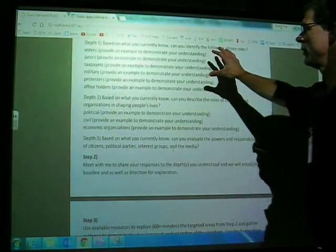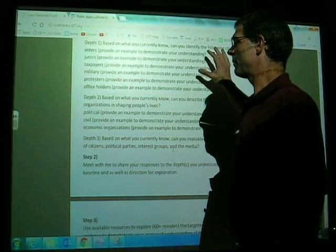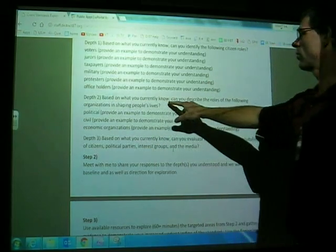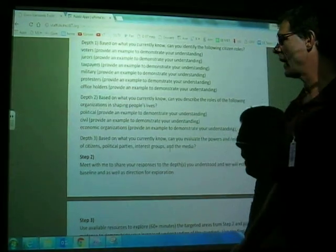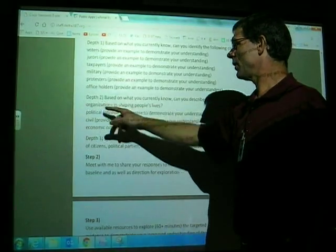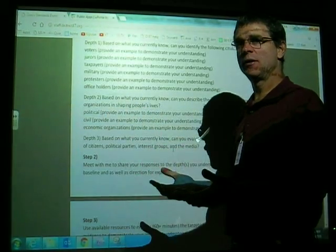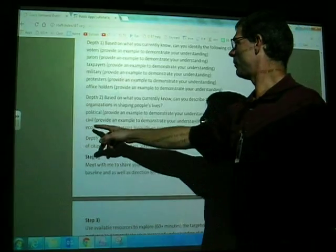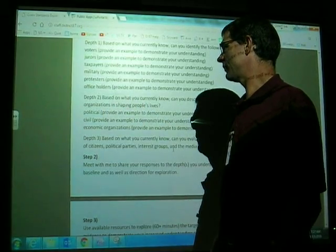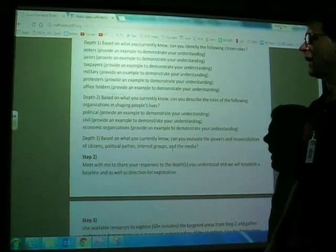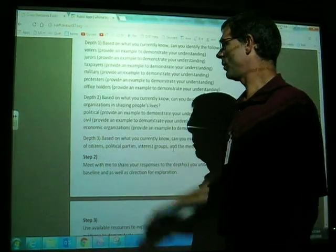If we figure out you're beyond this, we'll look at Depth 2. So if you feel like you have a good grasp of Depth 1, let's look at Depth 2. Based on what you currently know, baseline, can you describe the roles of the following organizations in shaping people's lives? Political organizations. How do political organizations shape people's lives? You need to know kind of what they are and how they affect things. How about civil organizations? How do civil organizations affect people's lives? And economic organizations. How do economic organizations affect people's lives? This is going to be a little bit trickier. And so you may not really know what these are about.